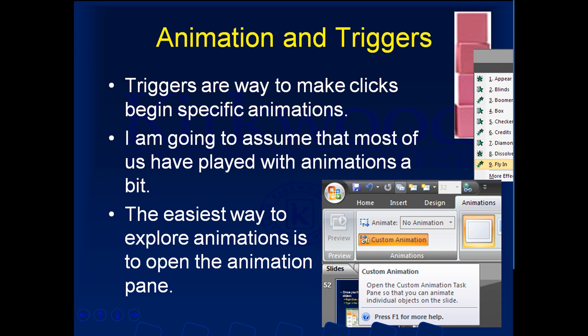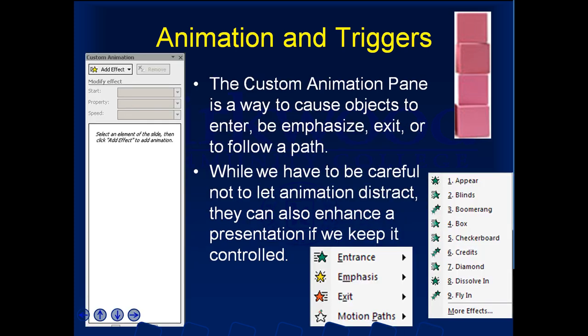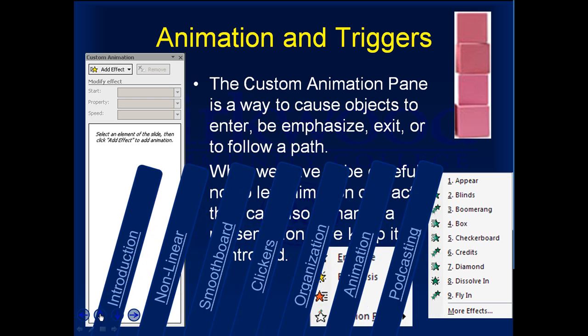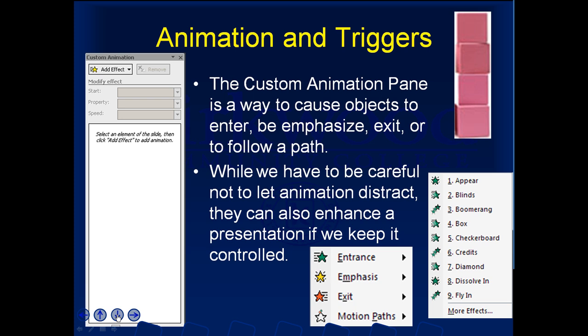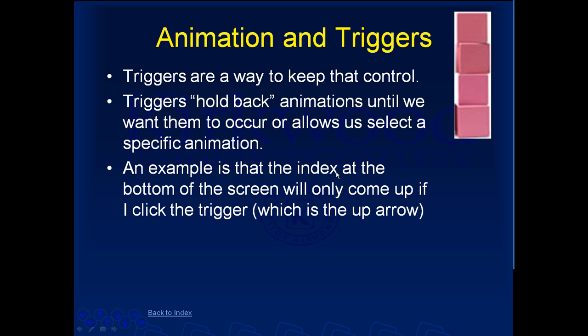Triggers are a way to make clicks begin specific animations. Most of us have a general idea about animations — you can explore them by opening up the Animation Pane. The custom animation pane shows different types of effects: you can make things appear or go away, add emphasis, or do motion paths. Once you have the animation, the trigger is the way to actually cause that animation to occur — clicking a trigger here animates something up, clicking another causes it to go down.